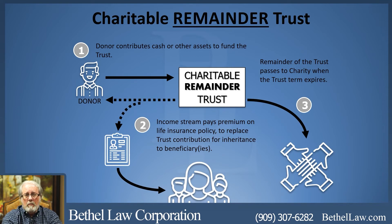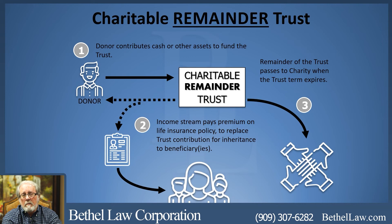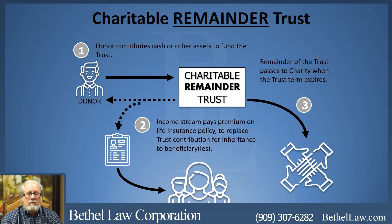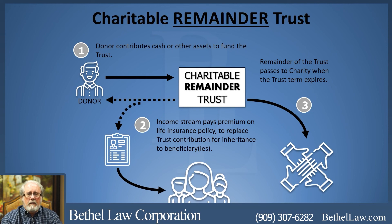To replace the wealth that is being donated to charity, one strategy is to take that annual income stream from the charitable remainder trust and invest it into a life insurance policy. The death benefit of that policy is structured to equal, or closely approximate, the amount originally donated into the charitable remainder trust that will ultimately go to the charity. By doing this, you are effectively replacing the wealth for the family. This is a typical planning tool used quite a bit with families involved in charitable remainder trusts — the beauty is that both the charity and the family benefit, with the family receiving the return of their donation through the life insurance policy.